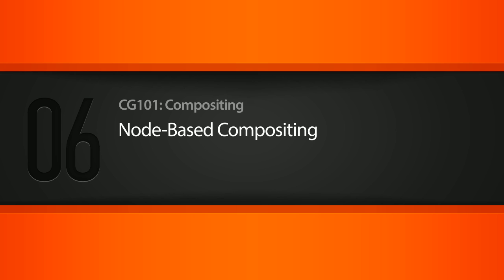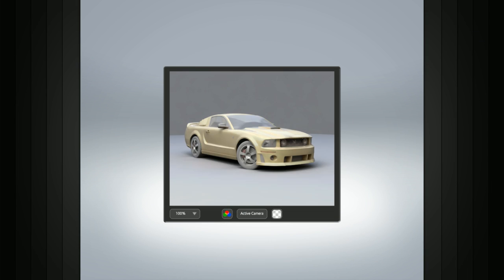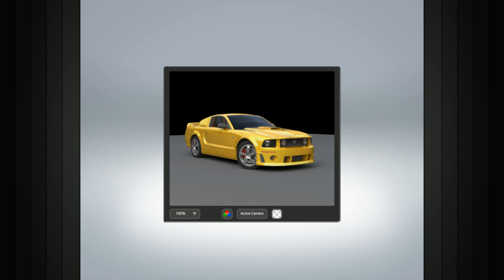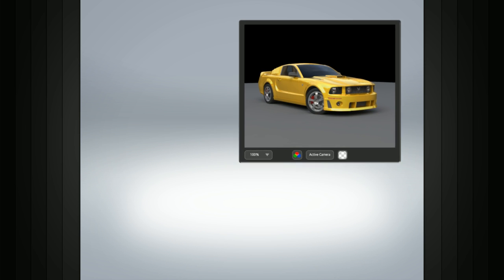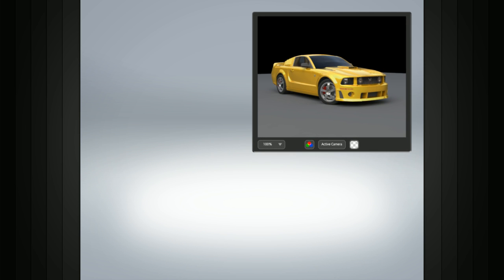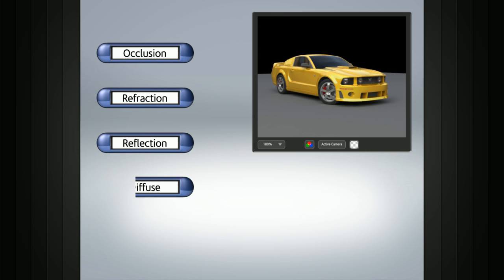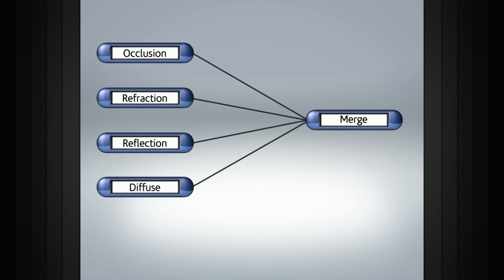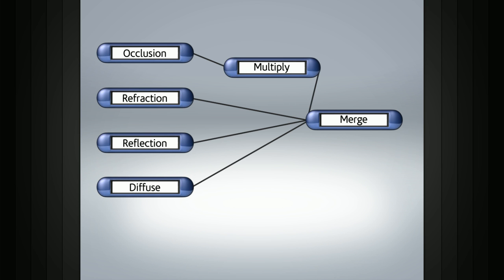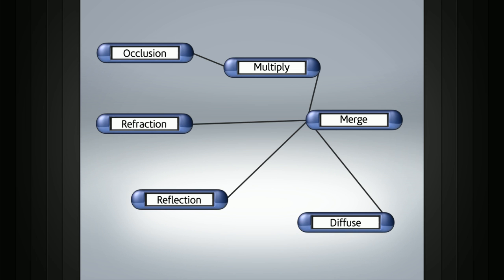In this lesson we will learn about node-based compositing. All compositing is based on bringing together different elements or pieces of footage and making them all work together using a variety of techniques. The node-based workflow takes each of the elements and places them as a node in a large open workspace. We can then tie the nodes together or change their properties using other nodes. The physical location of a node does not matter, only how those nodes are connected together.